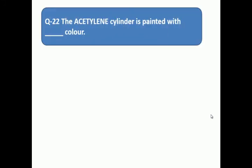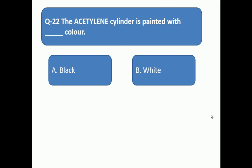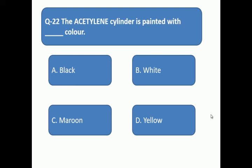Question number 22: The acetylene cylinder is painted with which color? Acetylene cylinder is painted with which color? A: black, B: white, C: maroon, D: yellow.